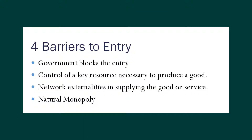Here are the four sources that will prevent other firms from entering. Some economists argue the only true source of monopoly is government blocking entry. Two of the sources tend to be more temporary conditions that will resolve themselves. Some economists argue natural monopoly is the one source that would persist even without blocking entry, though others argue even that would resolve over time through technology. But any one of these four situations can, at least for a time, be the reason entry is blocked and provide a firm a monopoly.